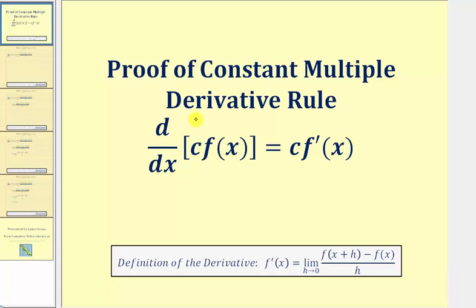Welcome to a proof of the constant multiple derivative rule, which is the derivative of a constant times the function f of x with respect to x equals the constant c times f prime of x.